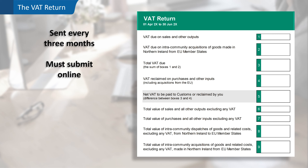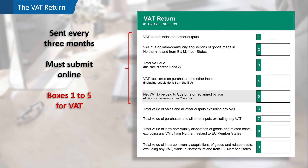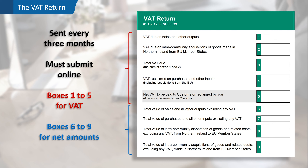There are nine boxes to complete on the return. Boxes one to five show the VAT element only, and boxes six to nine show amounts without VAT and are shown in whole pounds. Let's look at each box in a little more detail.